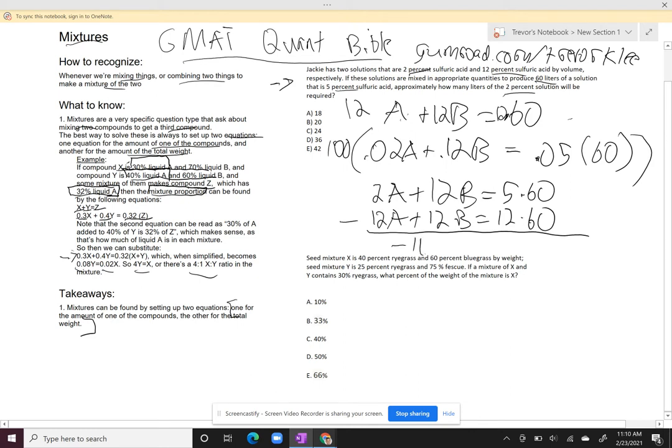Now I can subtract my equations. Minus 10A equals minus 7 times 60. All right. Now I can divide both sides by minus 10, and I get A equals 7 times 6, or in other words, A equals 42.